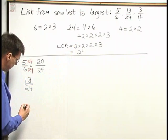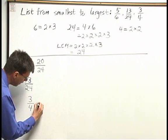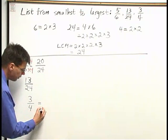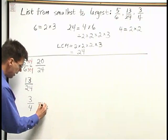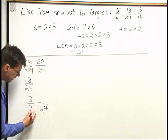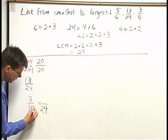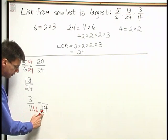My third fraction is 3 4ths. I'd like to rewrite 3 4ths with denominator 24. And let's see here. Now 4, I need to multiply by 6 to get 24. 4 times 6 is 24.